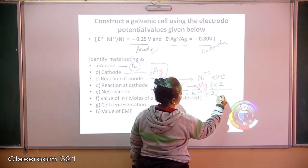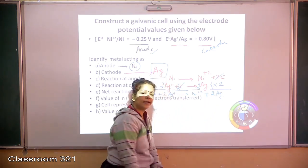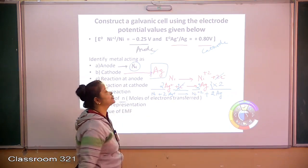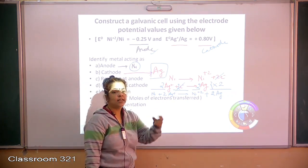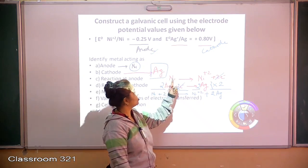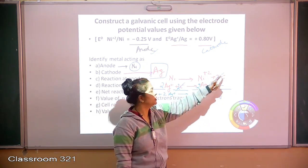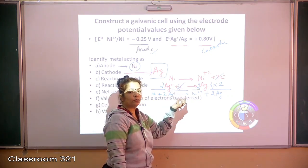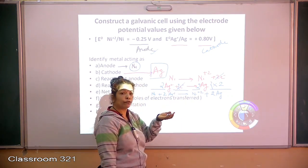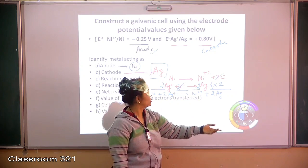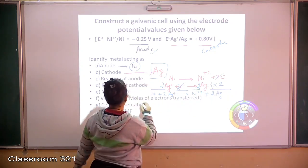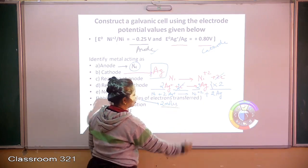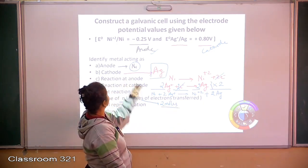What is the value of n? N stands for the number of moles of electrons transferred from the anode to the cathode. We know electrons move from the anode towards the cathode, and we have 2e⁻, so the value of n is 2 moles of electrons transferred.